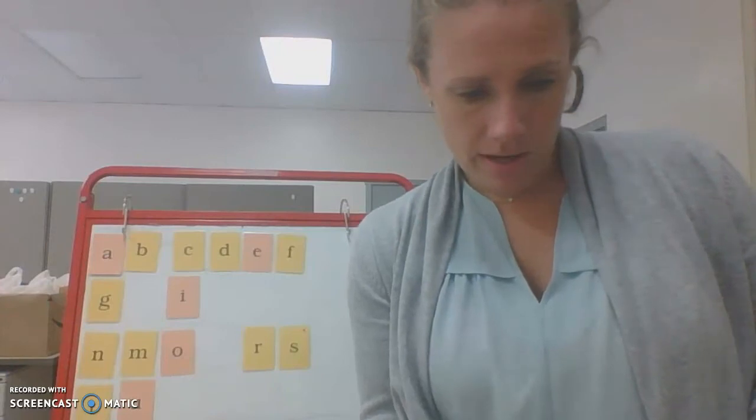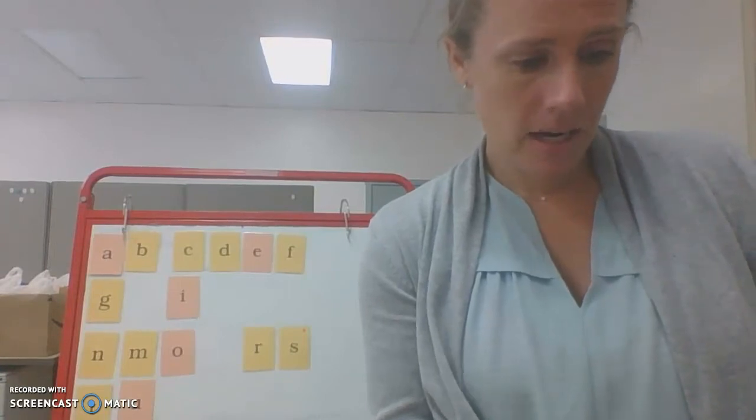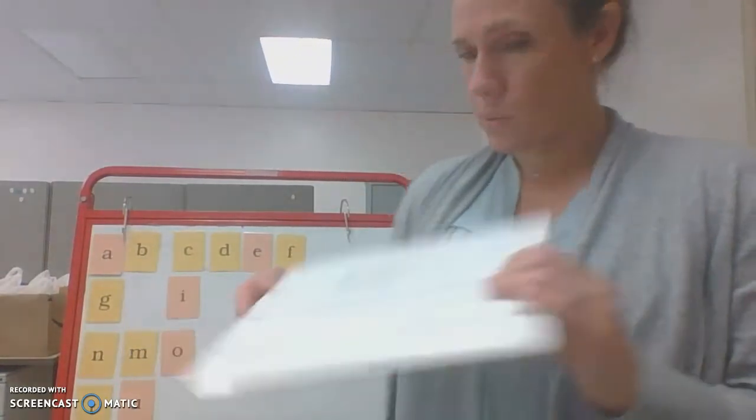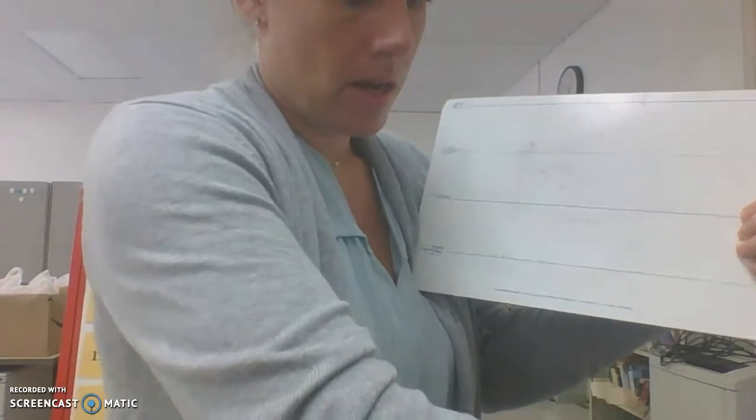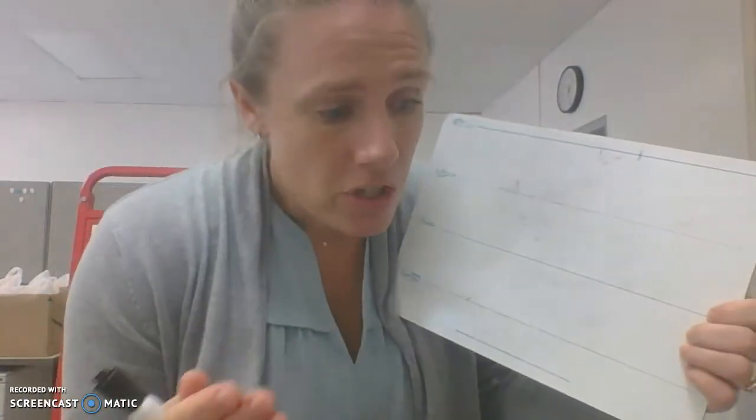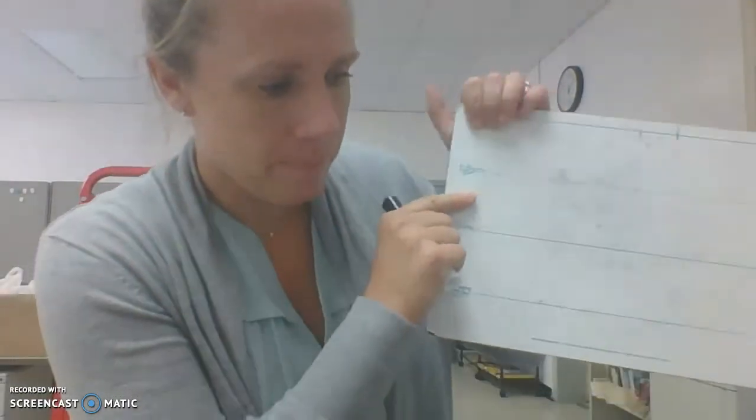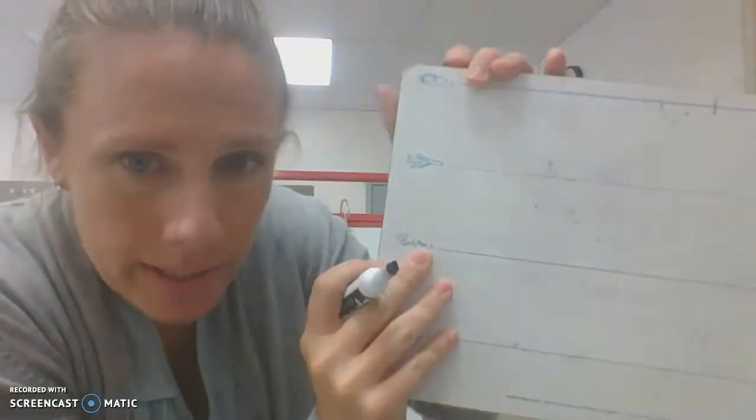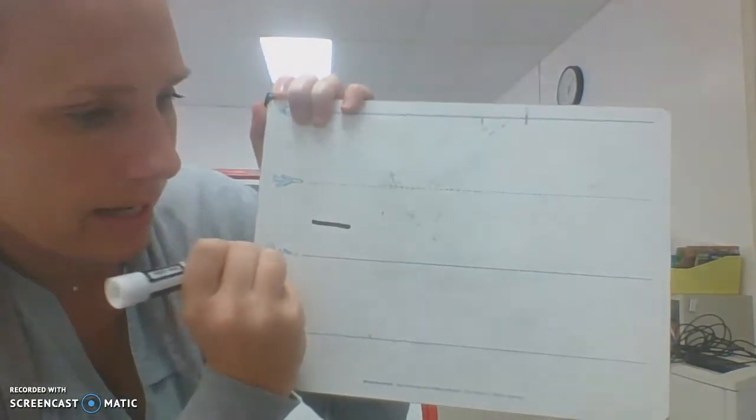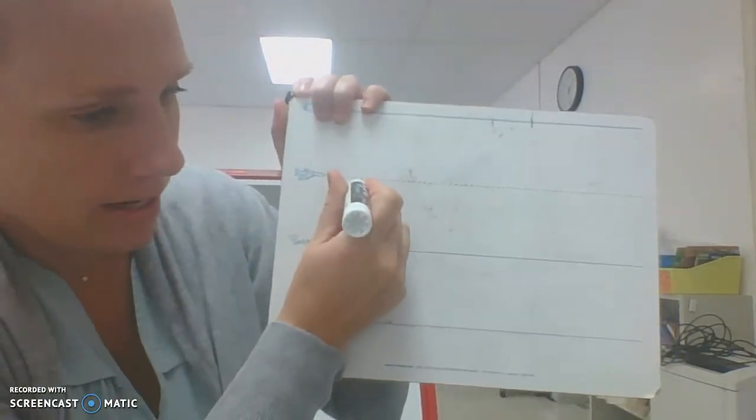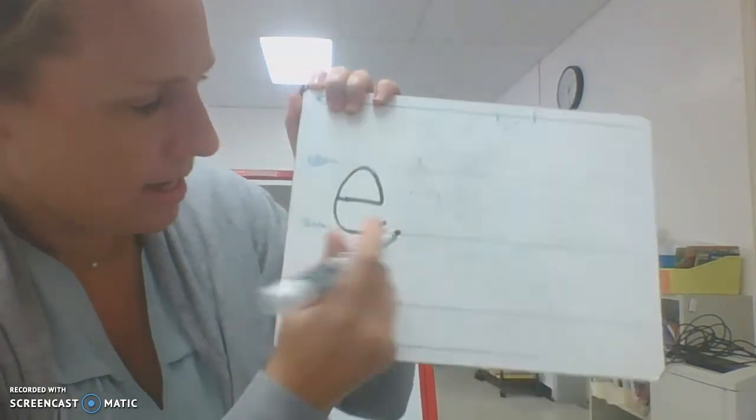Okay, my friends, time for us to practice writing E and R. They are both plain line round letters. That means we know that they are going to start on the plain line and they're going to have some curves. But it's important that you know E is a special letter because it actually starts below the plain line. So watch me do it first. Point between the plain line and grass line, fly under the plain line, then go up to the plain line, go around to the grass line. E, Ed, eh.